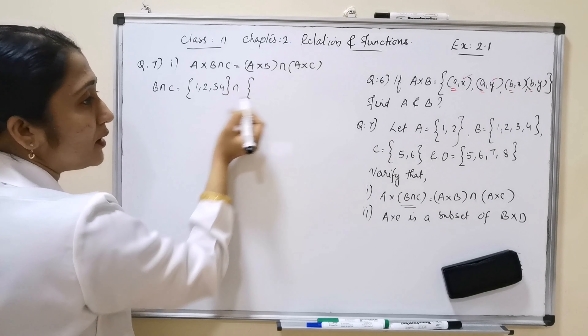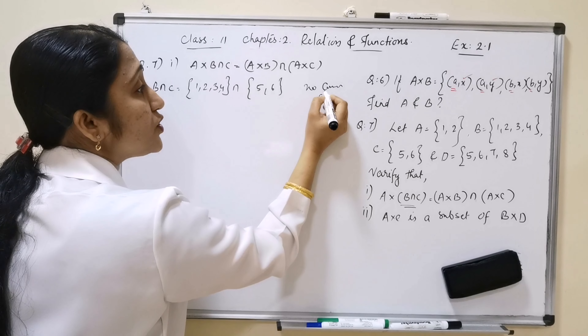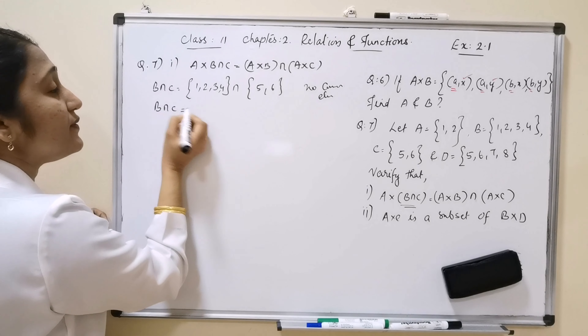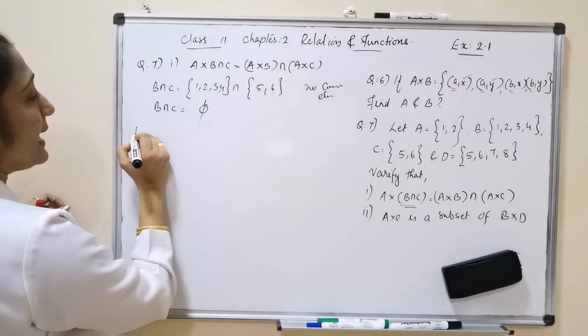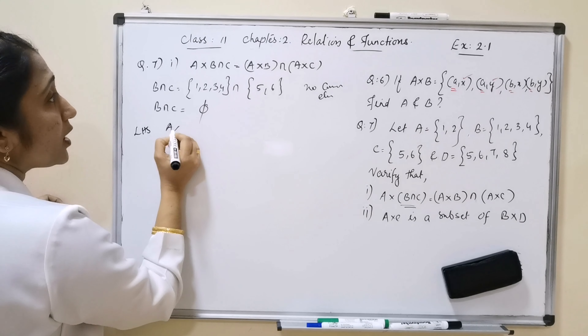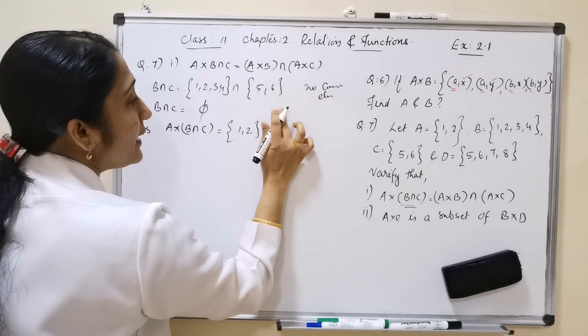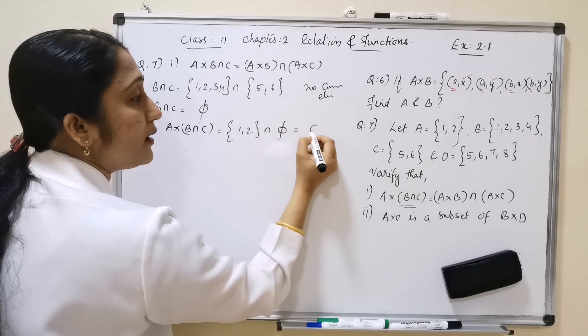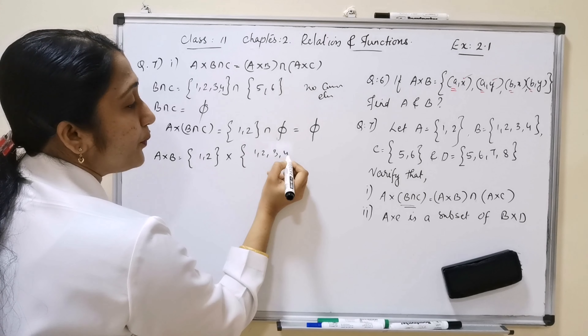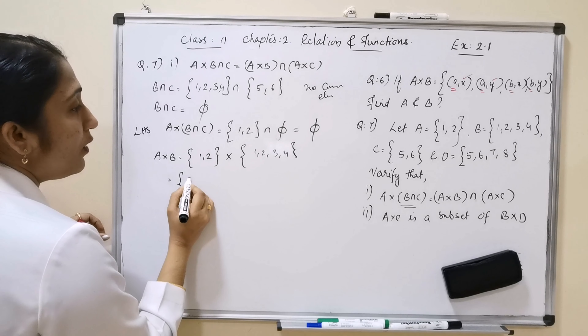B = {1,2,3,4} and C = {5,6}. Intersection means the elements common to both sets. Here B has elements 1,2,3,4 and C has elements 5,6 — there are no common elements. So B∩C = null set (∅). Therefore, the left-hand side: A×(B∩C) = {1,2} × ∅ = ∅.